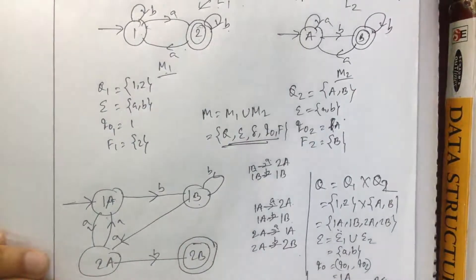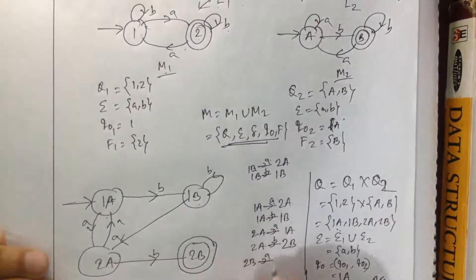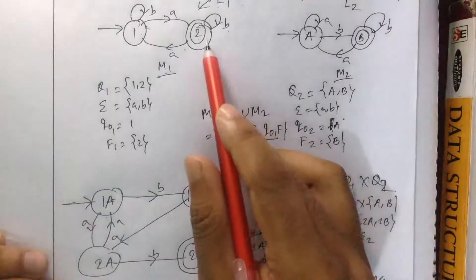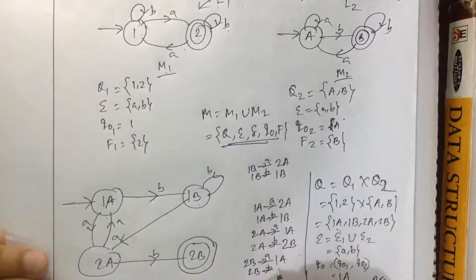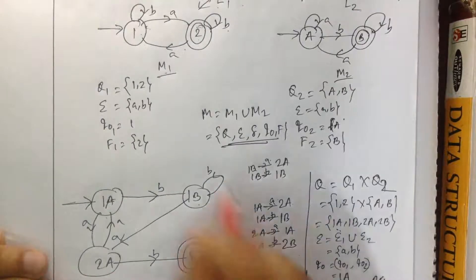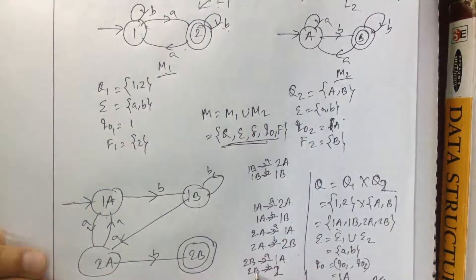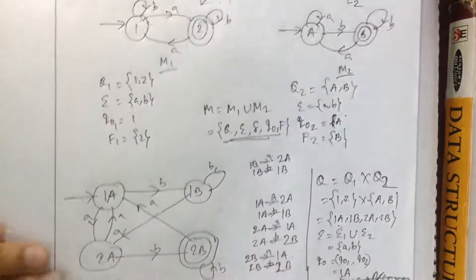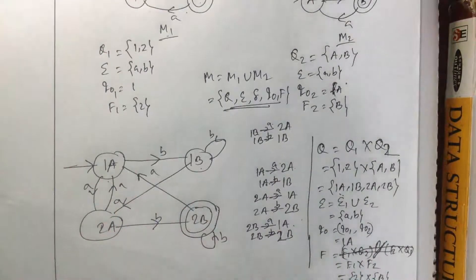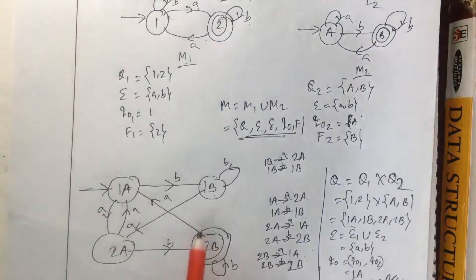When we complete all transitions, the final state is 2B. From 2B on A goes to 2A, on B stays at 2B. From 2A on B goes to 1B, on A goes to 1. All transitions are now complete.